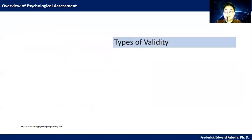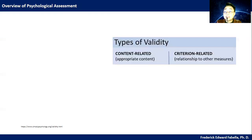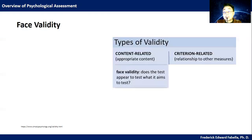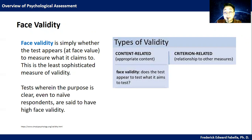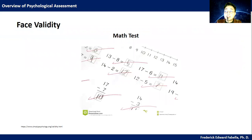Let's look at the types of validity: content-related and criterion-related. The first is face validity. Face validity is simply whether the test appears at face value to measure what it claims to — it is the least sophisticated measure of validity. Tests whose purpose is clear even to naive respondents are said to have high face validity. For example, does it look like a math test? If it does, then it has face validity.